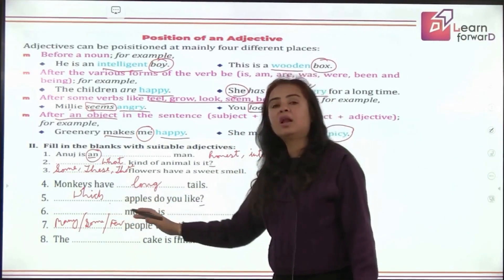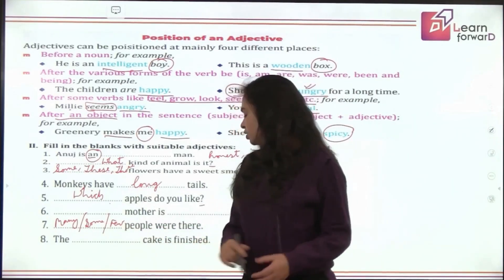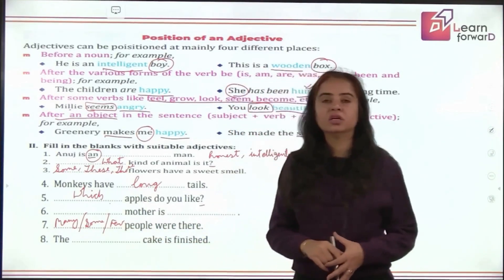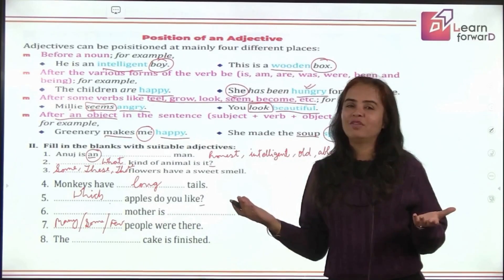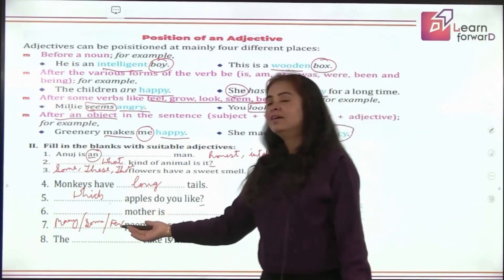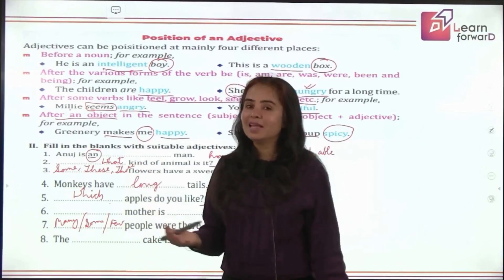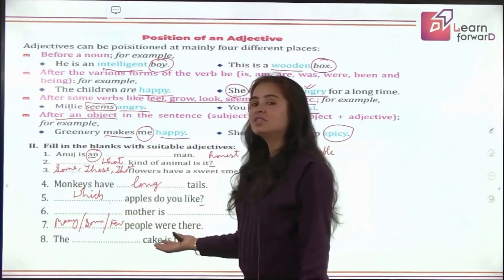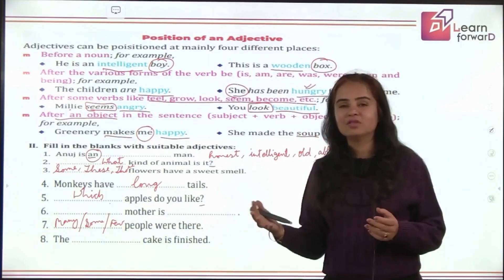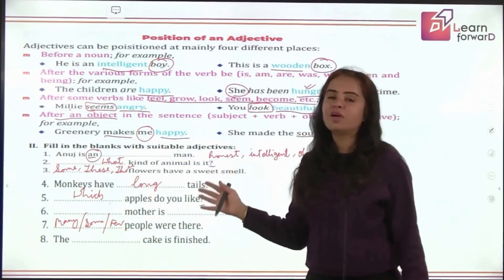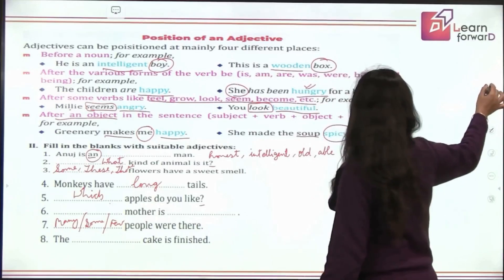Last sentence: 'The ___ cake is finished.' Which cake? Whichever is your favorite flavor — 'The mango cake is finished,' 'The birthday cake is finished,' 'The chocolate cake is finished.' You have lots of choices here. So that was an interesting exercise — now it's time to sum up what you have learned today about adjectives.